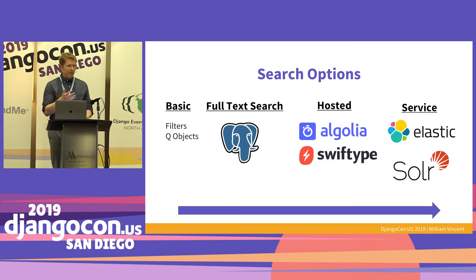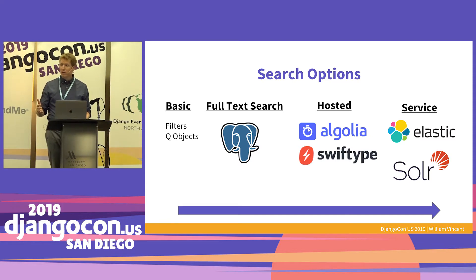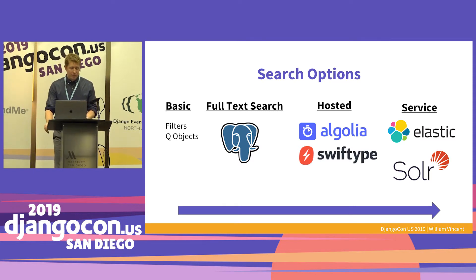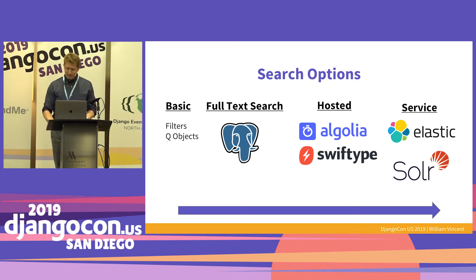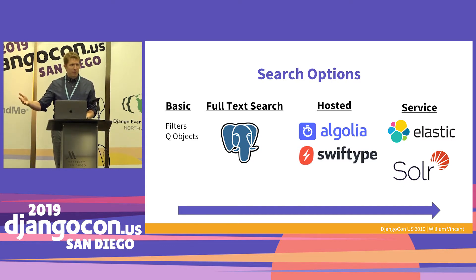This is the journey we're going to go on: basic search, which uses filters and Q objects; then the next step, Postgres built-in full-text search; and after that, hosted solutions — Algolia is fantastic, Swift Type is hosted Elasticsearch — and then full-blown services where you're spinning up your own servers: Elastic and Solr. I'd suggest you baby-step your way along this. It's tempting to jump straight to Elastic, but don't add stuff you don't need until you really need it.